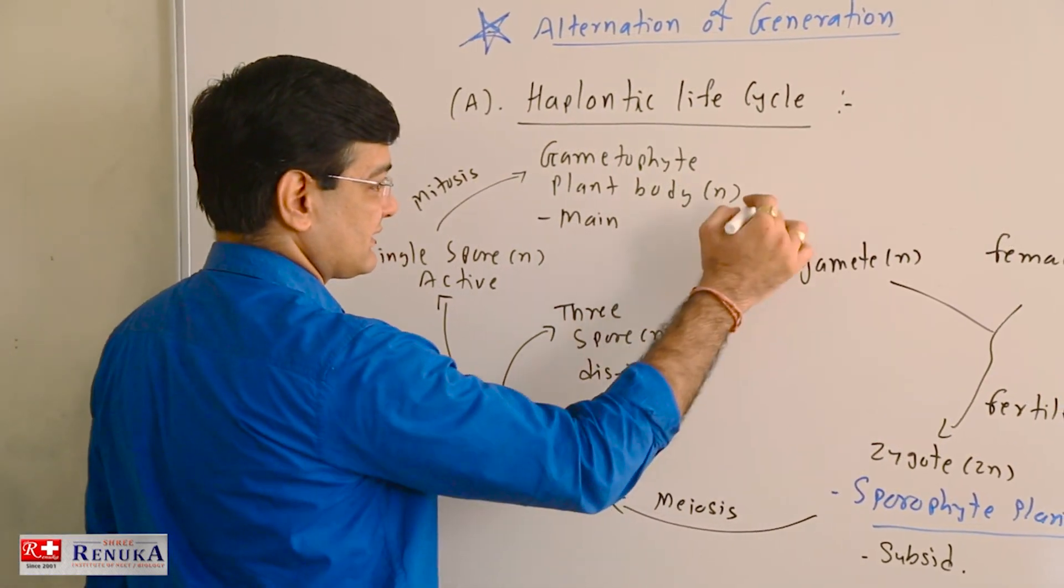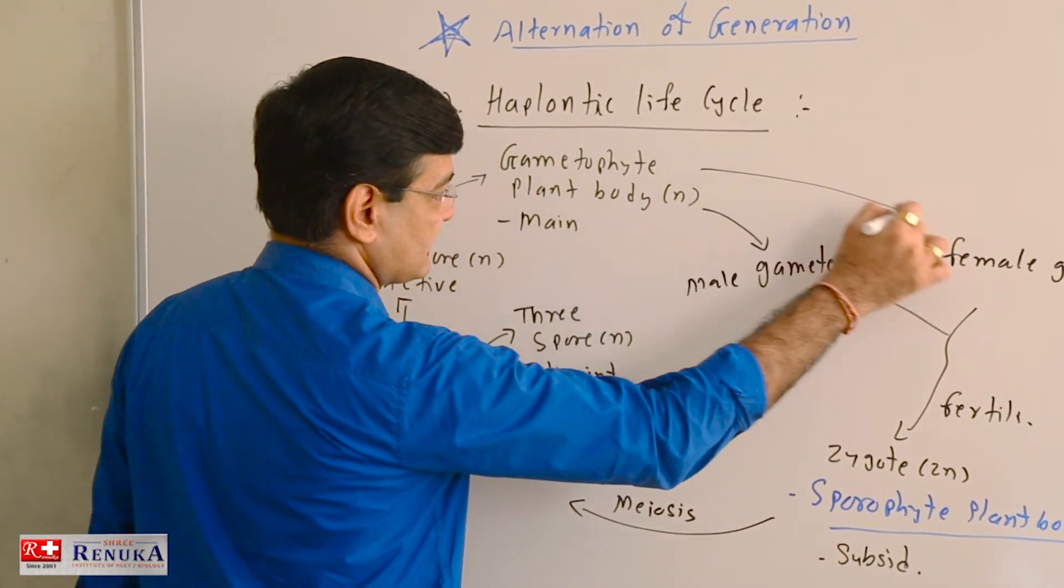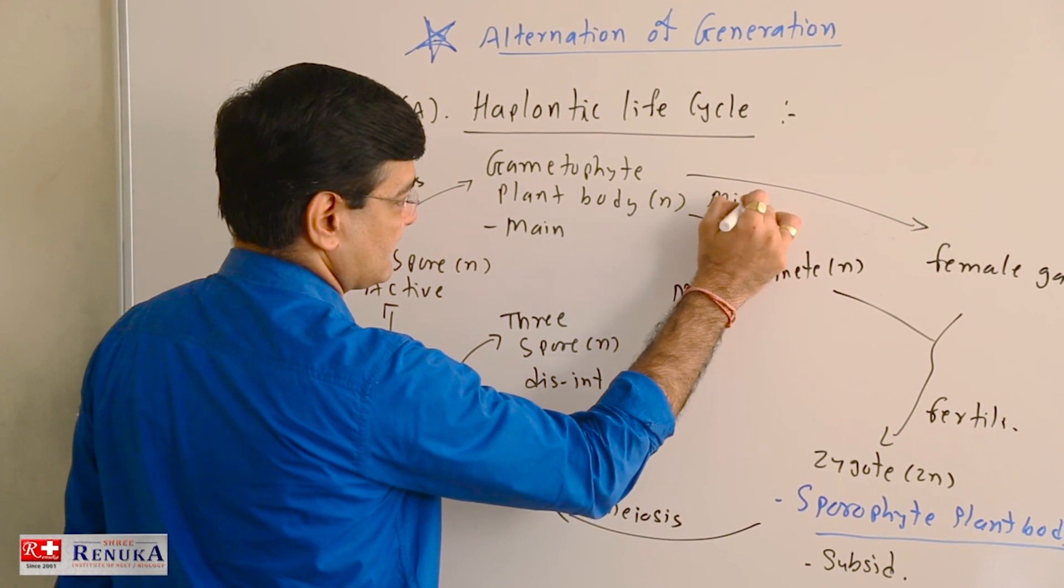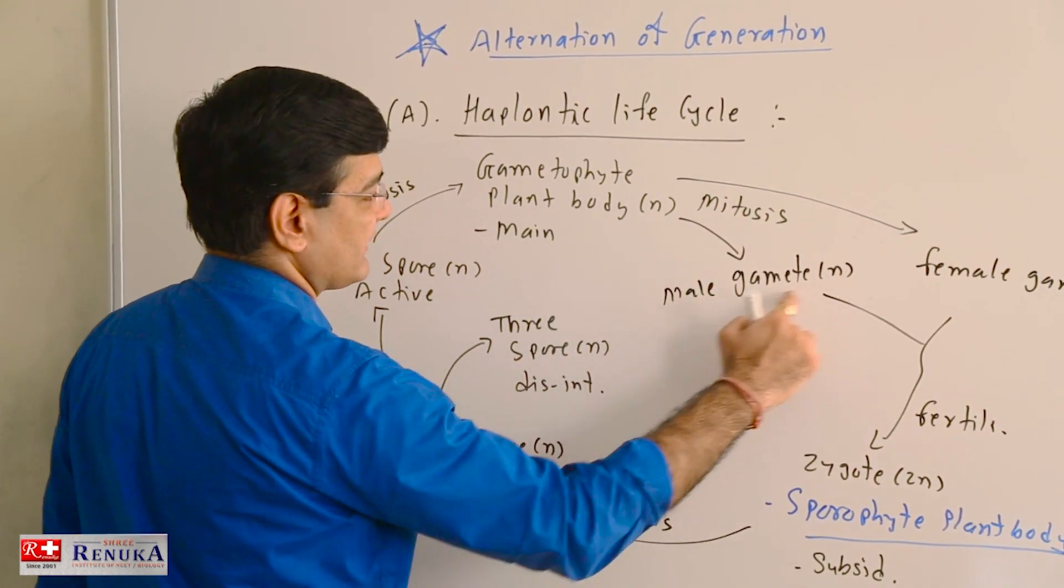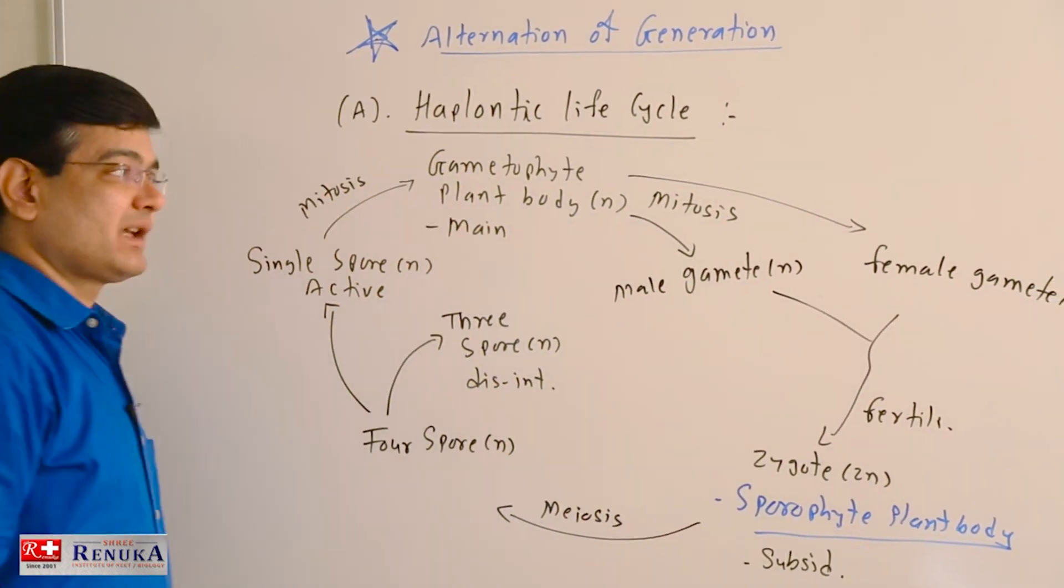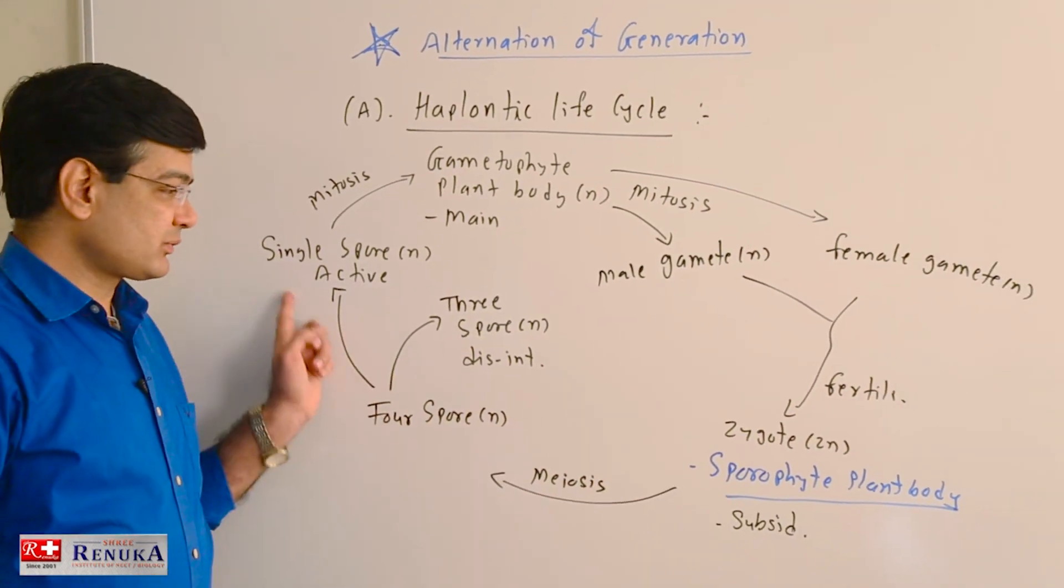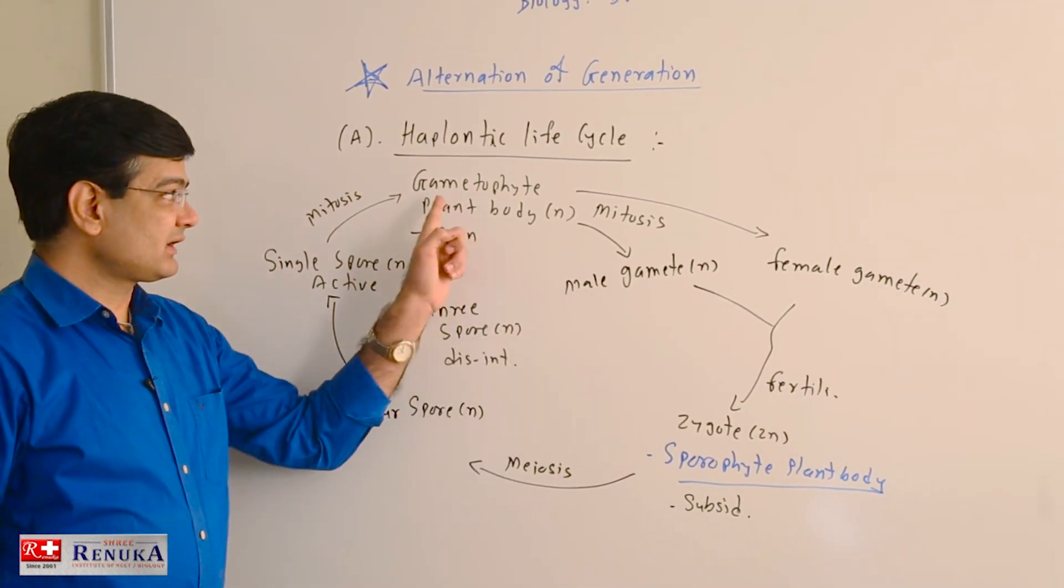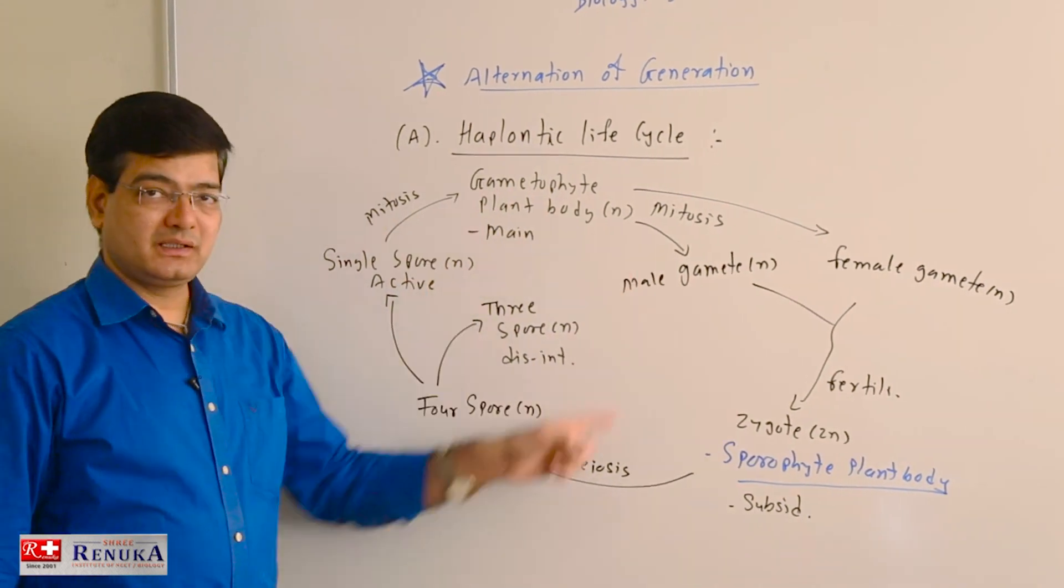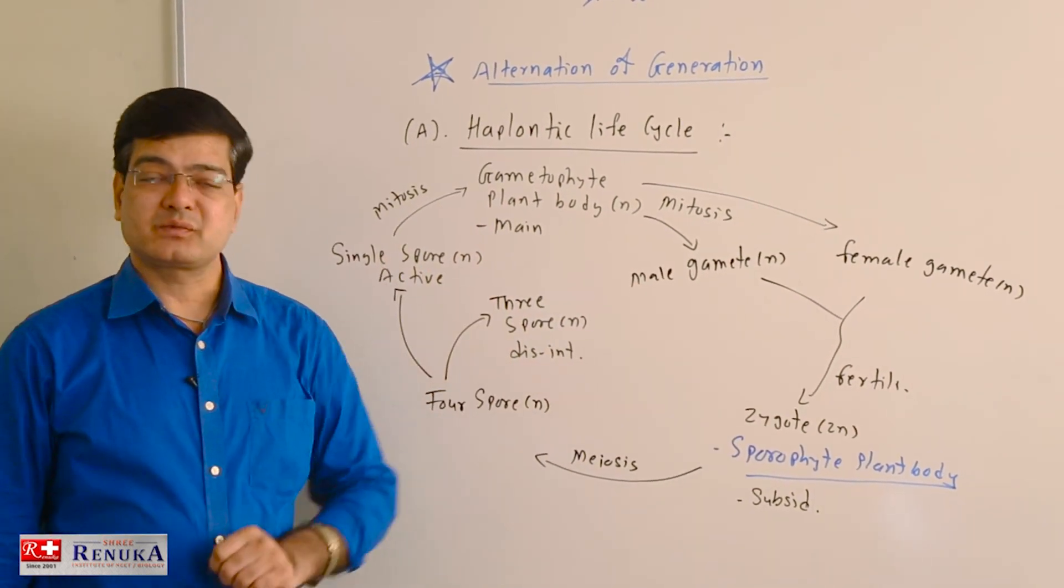This gametophytic phase undergoes mitosis to form male gametes and female gametes. And this way, during the life cycle, spore-producing sporophyte stage and gamete-producing gametophyte stage occur alternately, and so it is called alternation of generation.